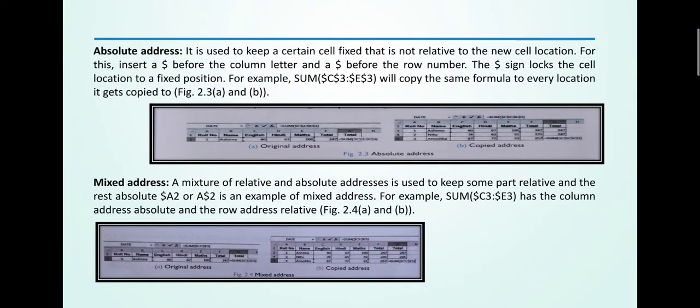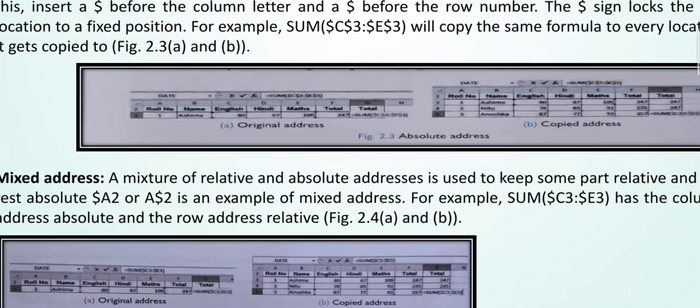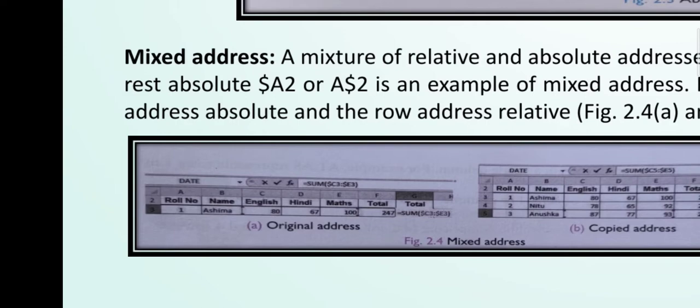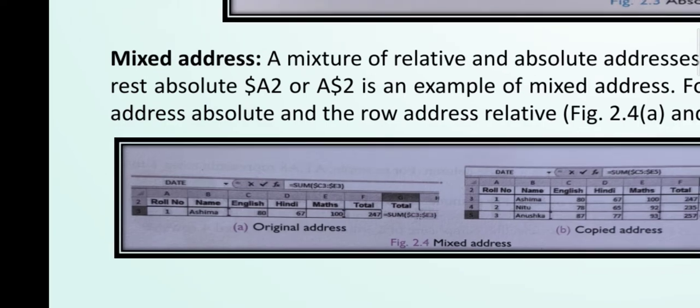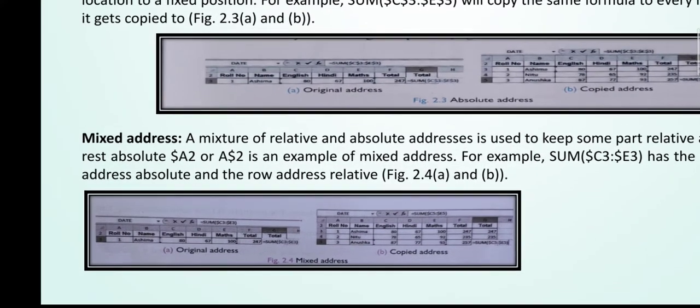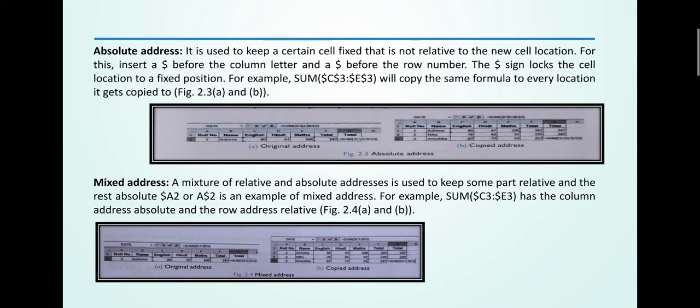Mixed address: A mixture of relative and absolute address is used to keep some parts relative and the rest absolute. This is an example of mixed address. Here you can see the picture: original address is SUM dollar sign C3 to dollar sign E3. This is called mixed address.